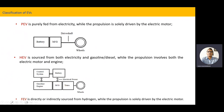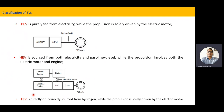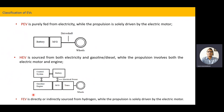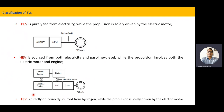The third one is the fuel cell electrical vehicle, which is directly or indirectly sourced from hydrogen, and propulsion is solely by electric motor. In the fuel cell, it will convert electricity using hydrogen and oxygen. That electricity produced by the fuel cell will be given to the battery and then to the electric motor. So again, the propulsion is electric-based. These are the important types of electrical vehicles as discussed earlier.